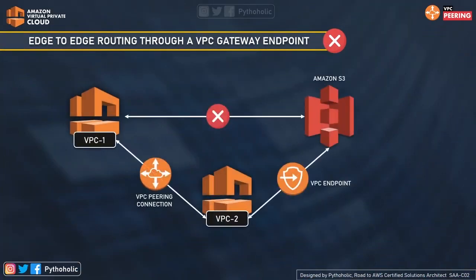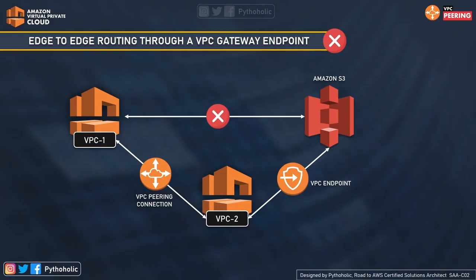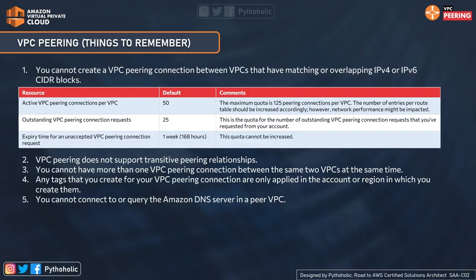One last example: if VPC1 and VPC2 have a peering connection, and VPC2 has a VPC endpoint connecting it to Amazon S3 — allowing VPC2 to store files and records in S3 — VPC1 does not have any endpoint connection to S3. You cannot use VPC2 to extend the peering relationship to exist between VPC1 and Amazon S3. Even though VPC2 has a connection to S3, VPC1 cannot use edge routing through VPC2 to access data at S3.